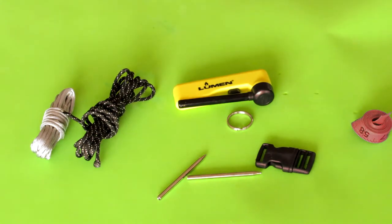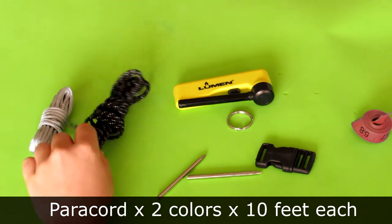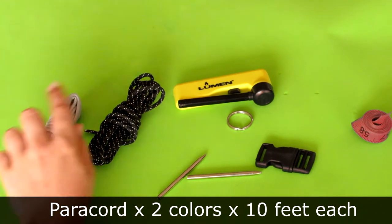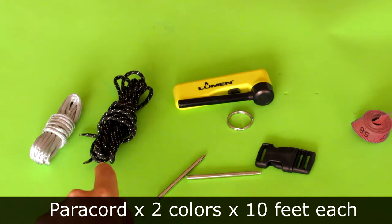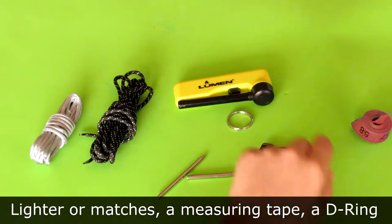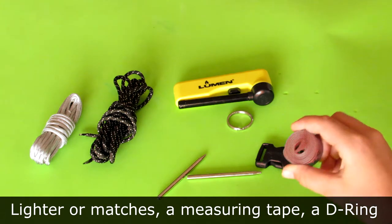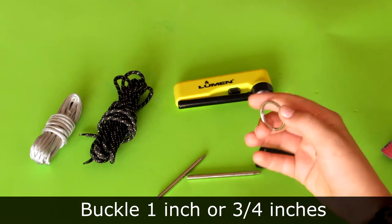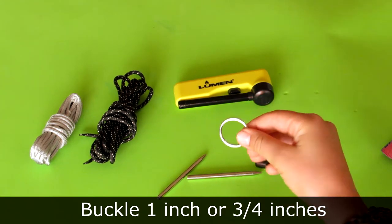Alright guys, so here's all the things you need to make your dog collar. You'll need two pieces of paracord that are 10 feet each. I have a silver one, a black one with silver dots, a lighter, then I have a bit of measuring tape. You have a D-ring. Well it's not a D-ring but I recommend using one of these. I have a keychain ring.